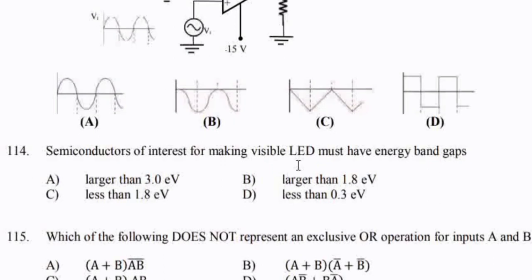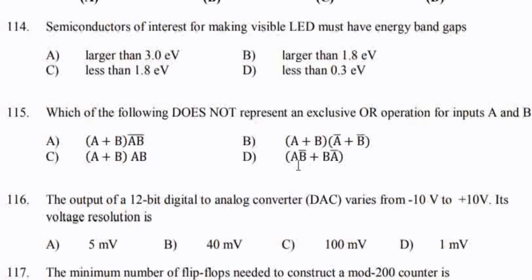Semiconductors of interest for making visible LEDs must have an energy band gap — option B and answer: larger than 1.80 eV.